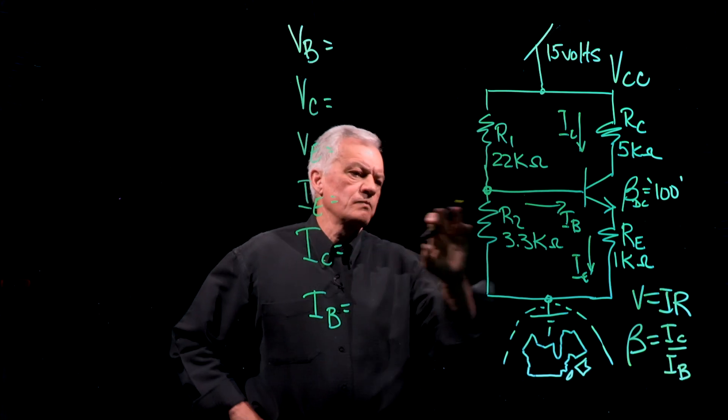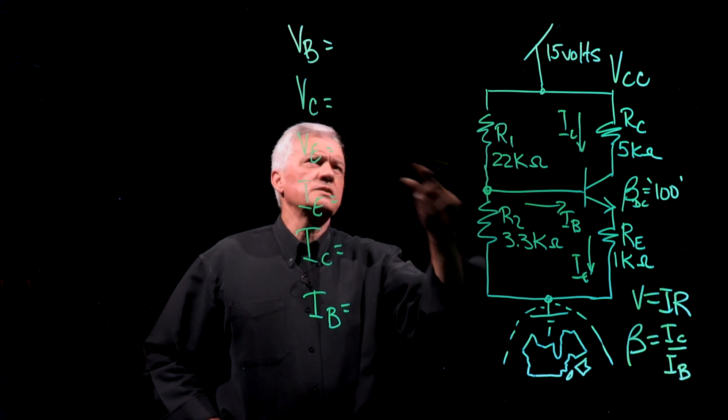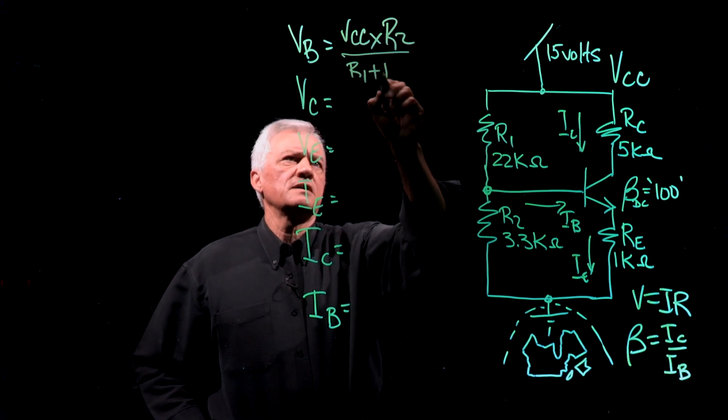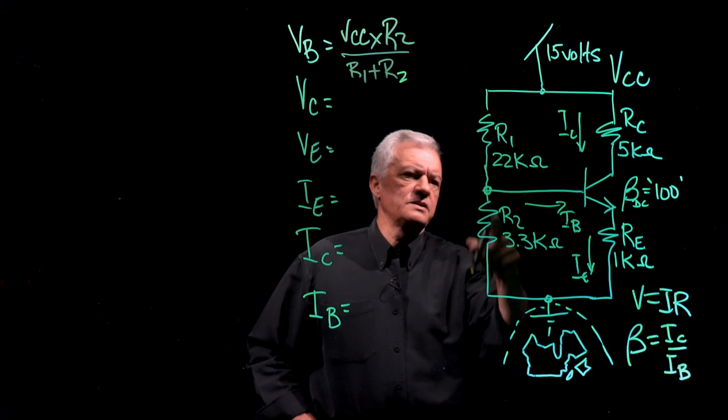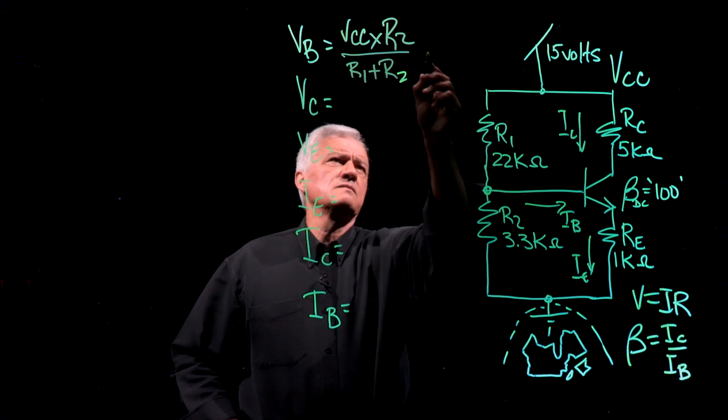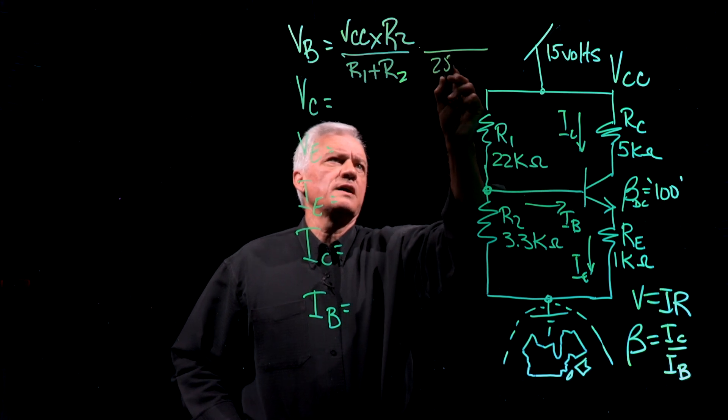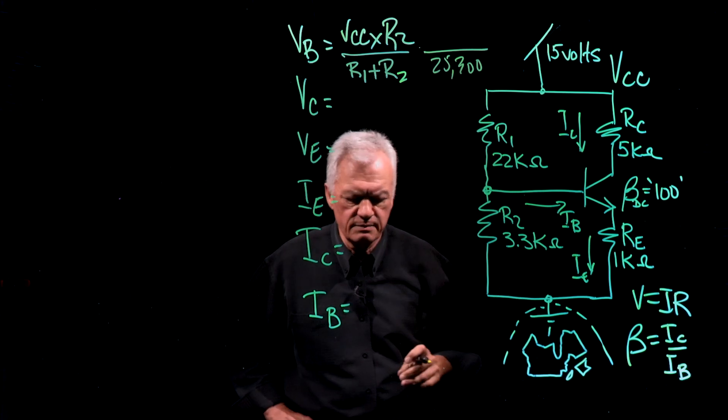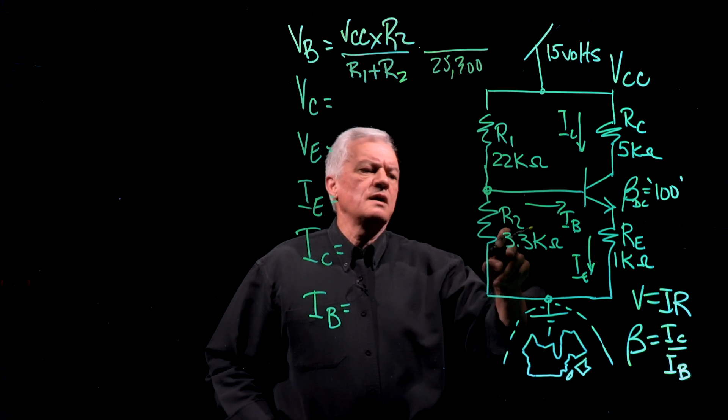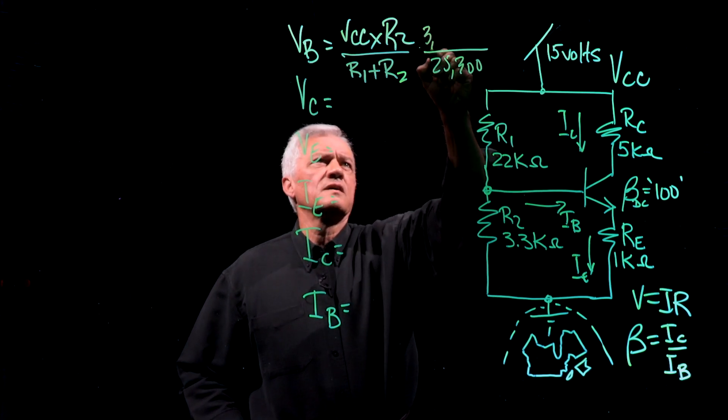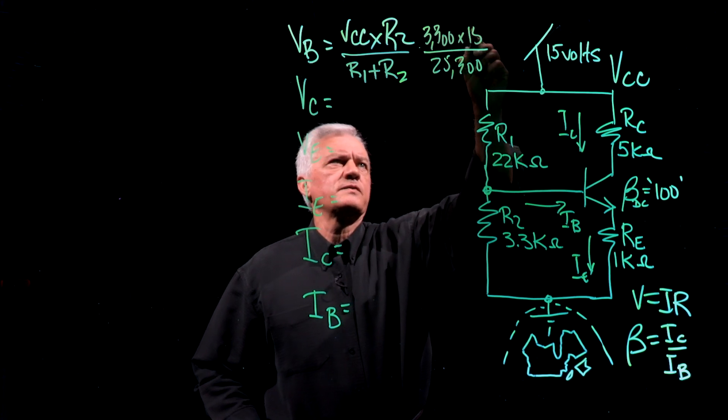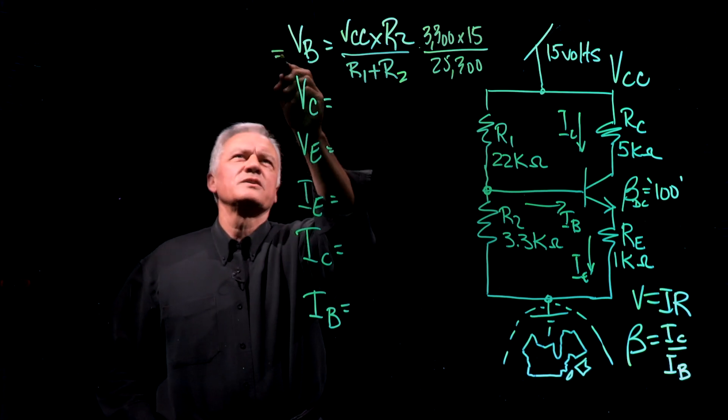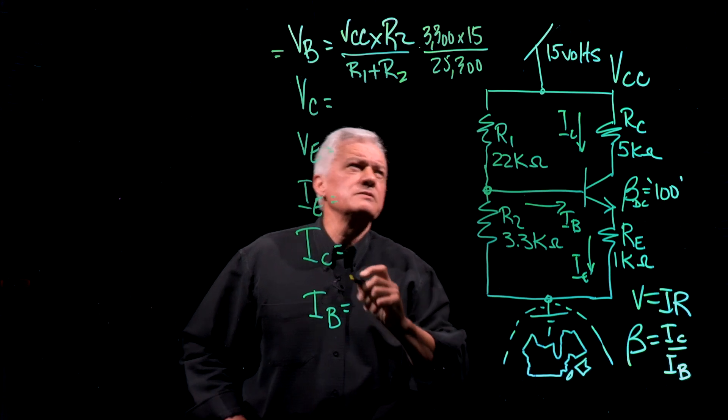We said before that to pick off a value here, we would use VCC times R2 over R1 plus R2. So that would be essentially 25.3K, correct? Let's just do it like this: 25,300, so K is 1,000, it's a multiplier by 1,000. And we have R2, which is 3,300, and we're multiplying that by 15. So just do the math in your head or with your calculator, and you should come up to see if you get the same number I do.